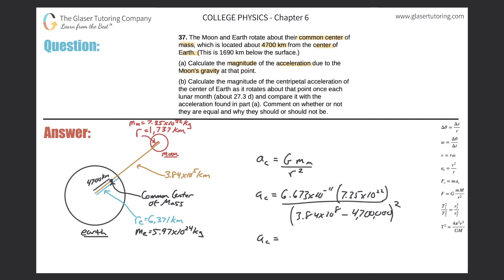So we get a value of about 3.4 times 10 to the minus five. That is the acceleration due to gravity of the moon at that particular point. So that takes care of letter A. Now let's move on to letter B.